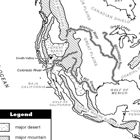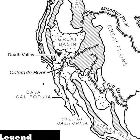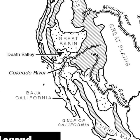Deserts lie between the mountain ranges. There, the Great Basin, Mojave, and the Sonoran Desert. The Chihuahuan Desert extends from southern New Mexico and Texas into Mexico.